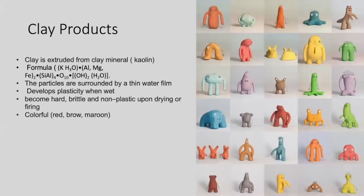Lastly, we have clay products. Clay is the main form which we associate ceramics with. Clay is extracted from the clay mineral kaolinite. In its formula, it has potassium, aluminum, magnesium, iron, silica, and water.